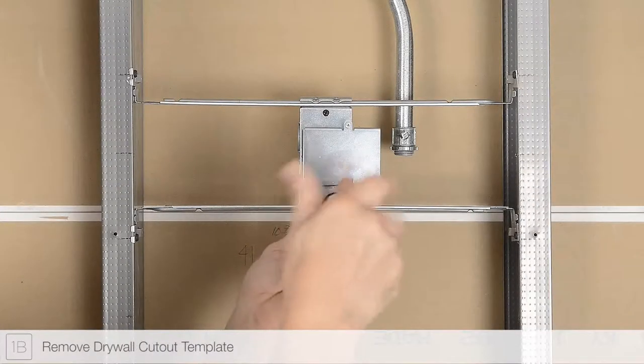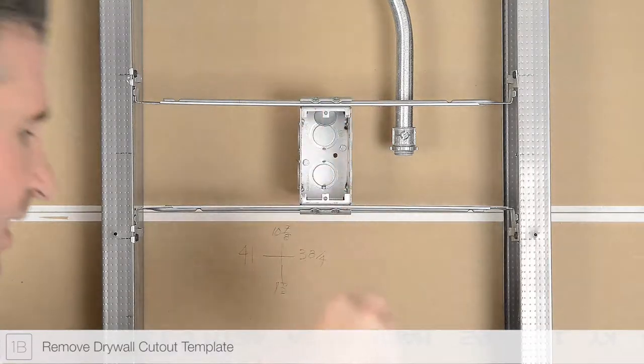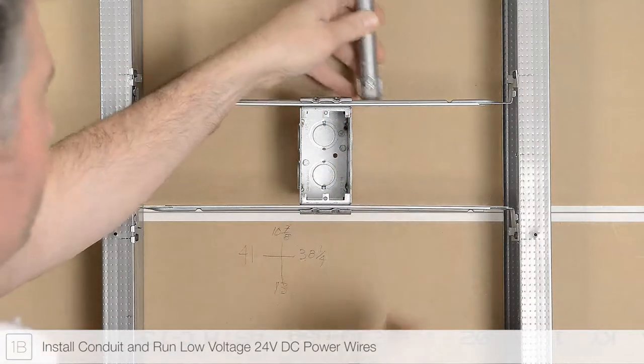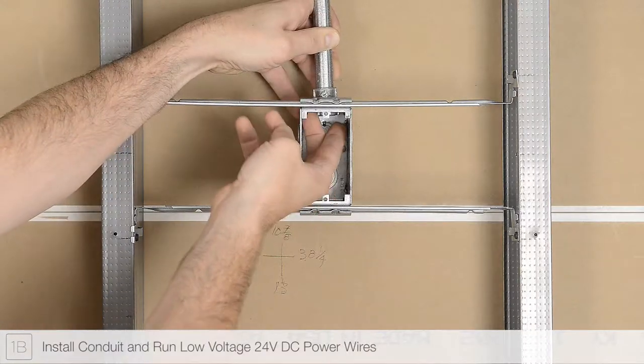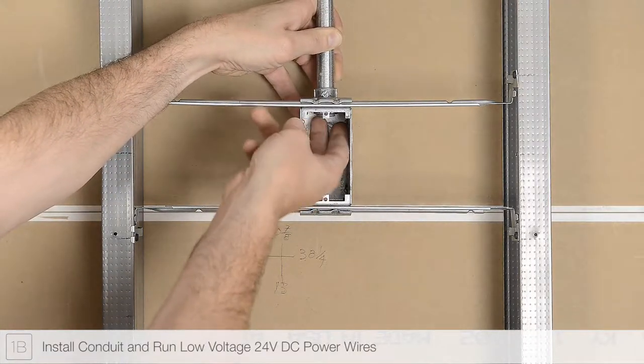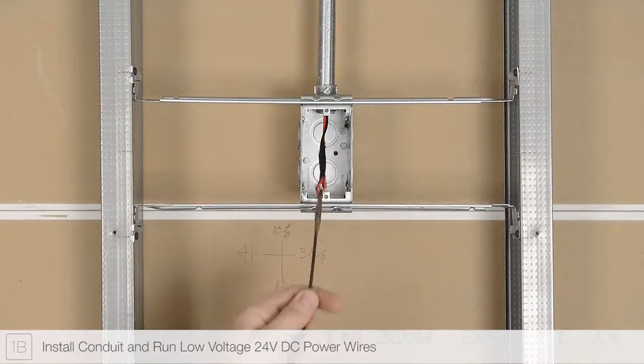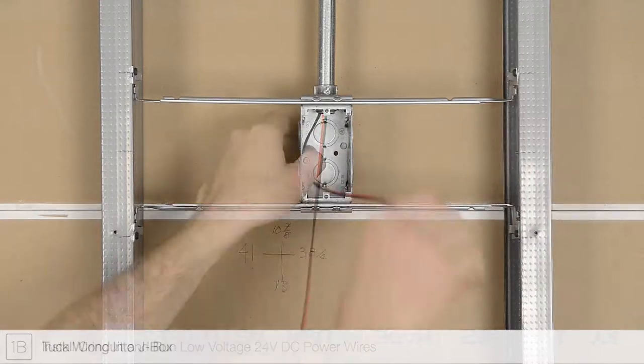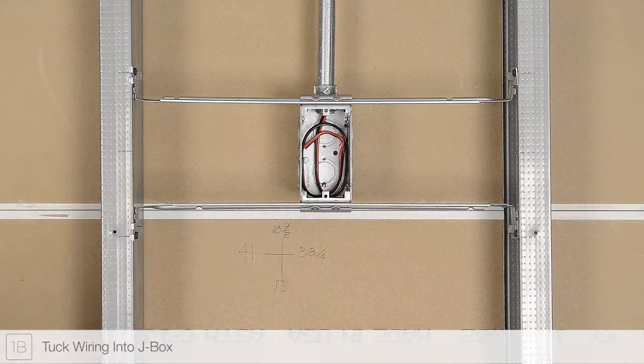Remove the drywall cutout template from the junction box. Remove a knockout from the power feed junction box and, if required by your local electrical code, install conduit. Route the low-voltage power wires from the remote power supply to the power feed junction box.